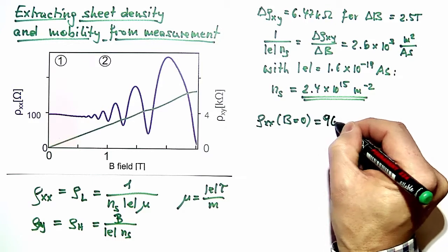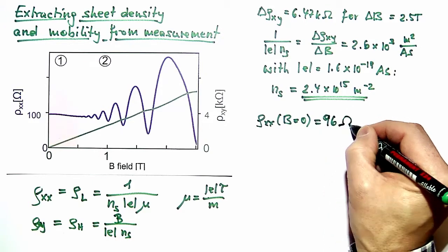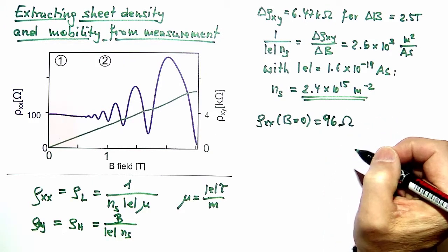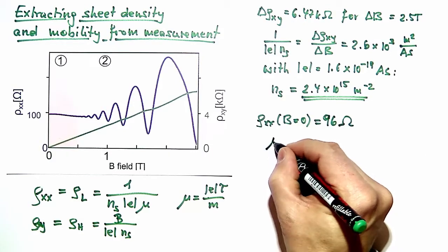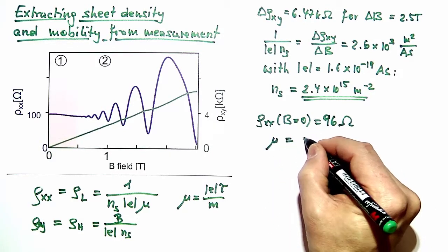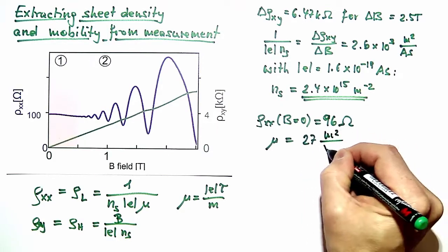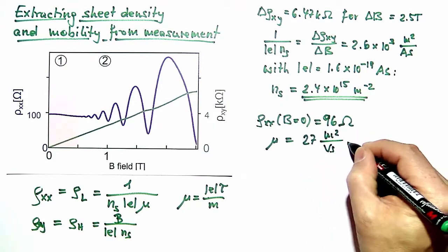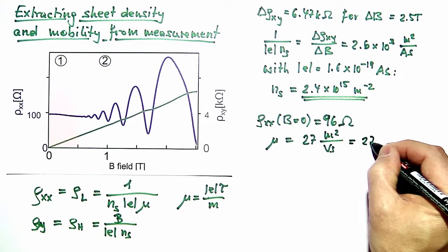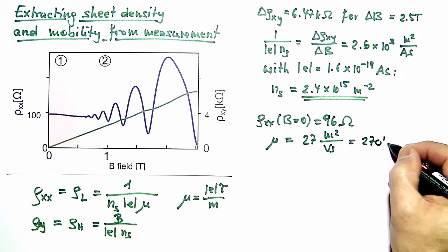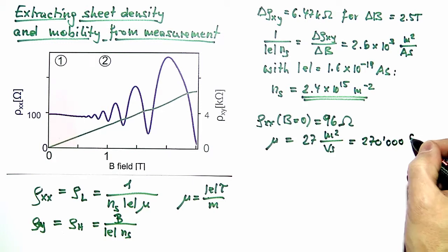So from the figure we read rho_xx at zero magnetic field, which turns out to be 96 ohms. And doing the little calculation we find a mobility of 27 meters squared per volt second, which is the same as 270,000 centimeters squared per volt seconds.